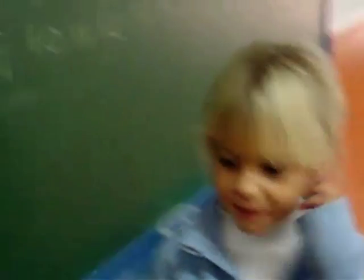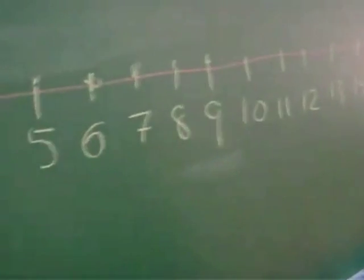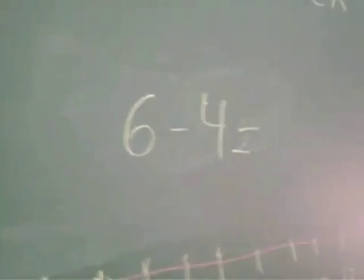Bueno, Irina, ¿ahora qué operación vamos a hacer? 6 menos 4. Vale. ¿Desde qué número vamos a empezar a contar en la recta? Hacia el 6. Vale. ¿Y cuántos saltitos vas a pegar? 4.